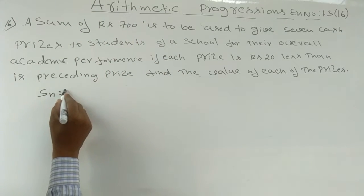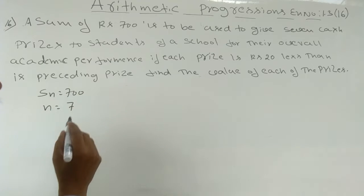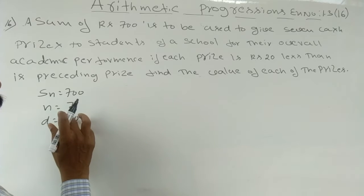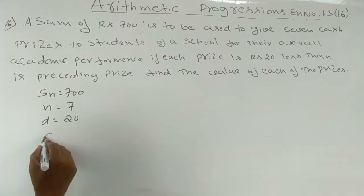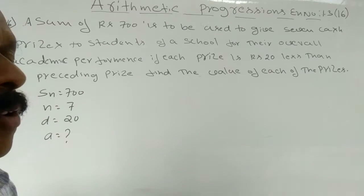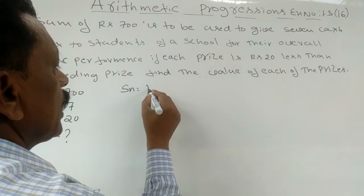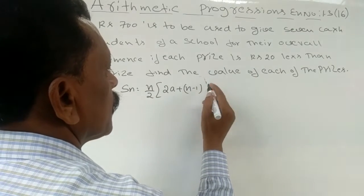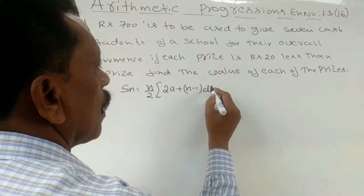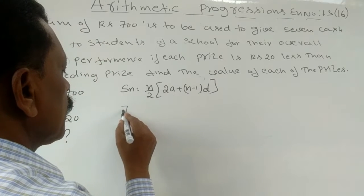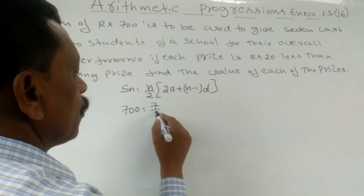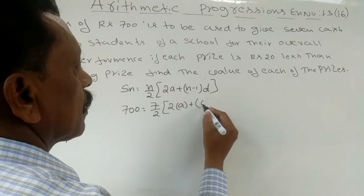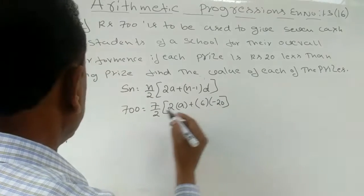Here, Sn is equal to 700, n is equal to 7, and d is equal to minus 20, since each prize is 20 less than the preceding one. We want to find the value of 'a', the first prize. Using the formula Sn = n/2 into (2a + (n-1) × d), we substitute: 700 = 7/2 into (2a + 6 × d), where d equals minus 20.